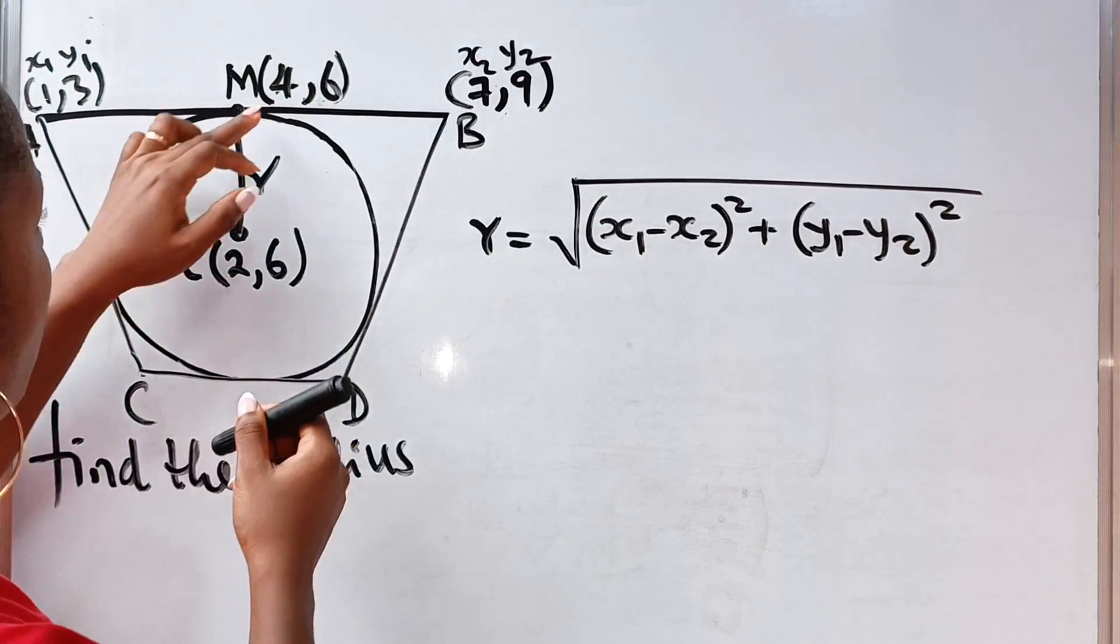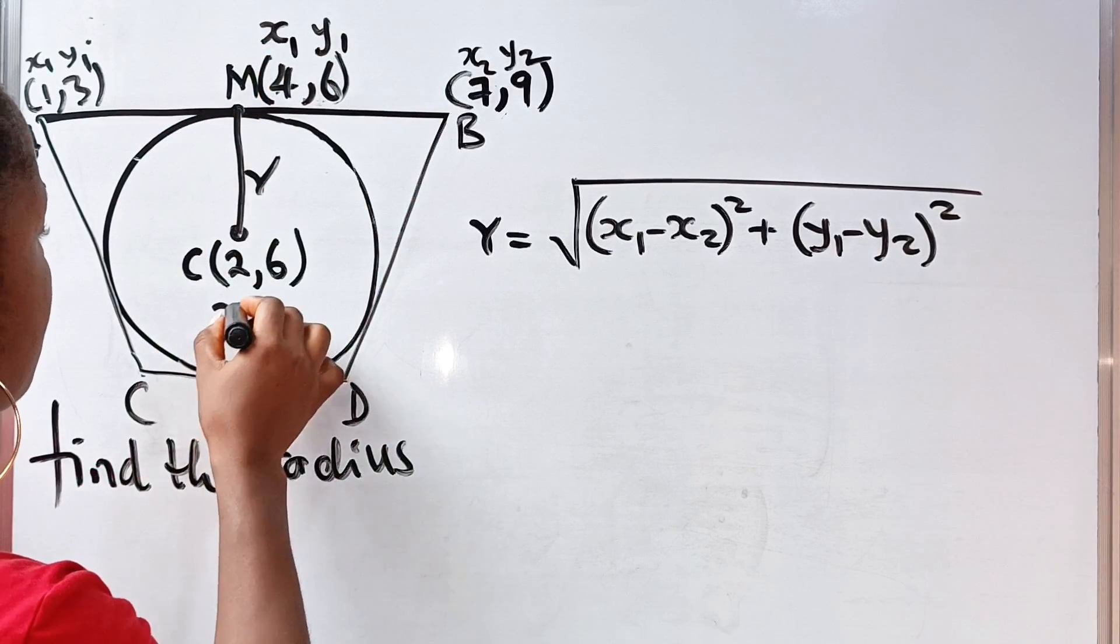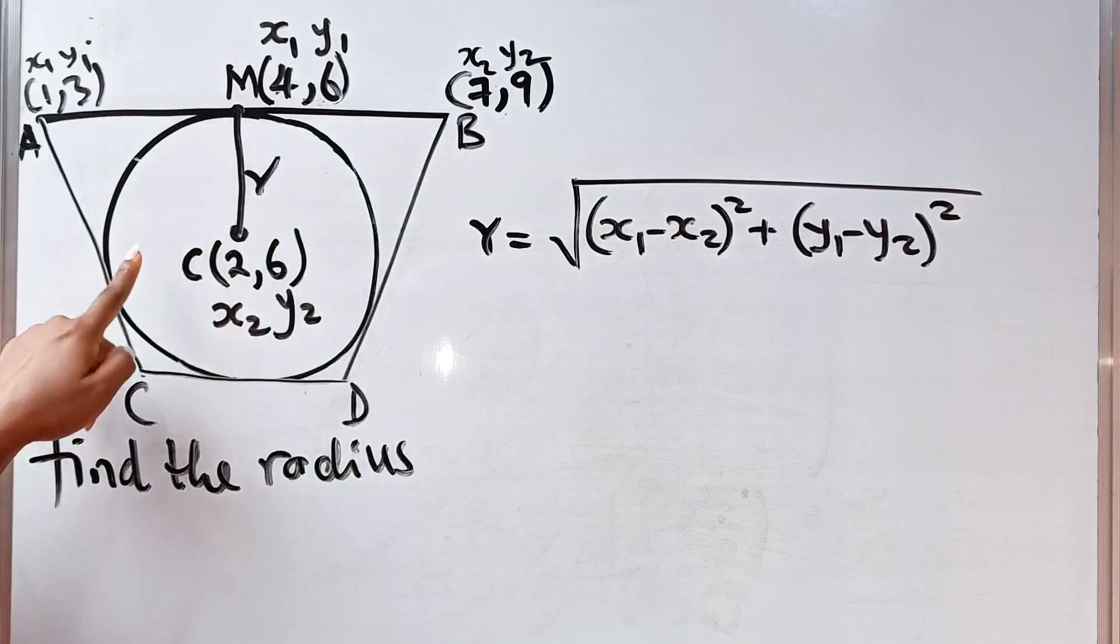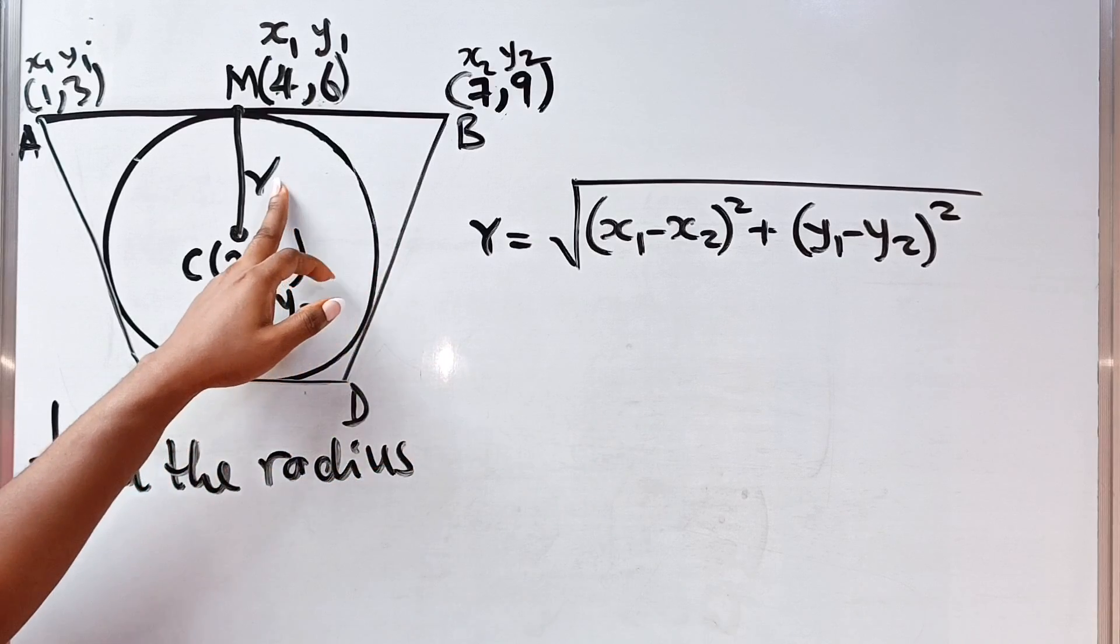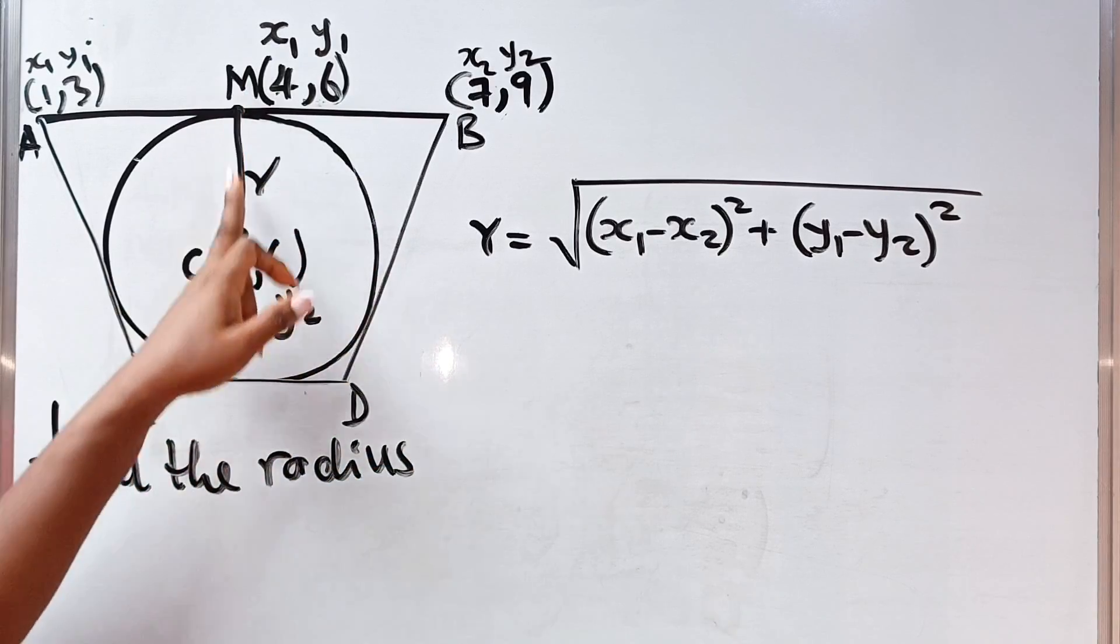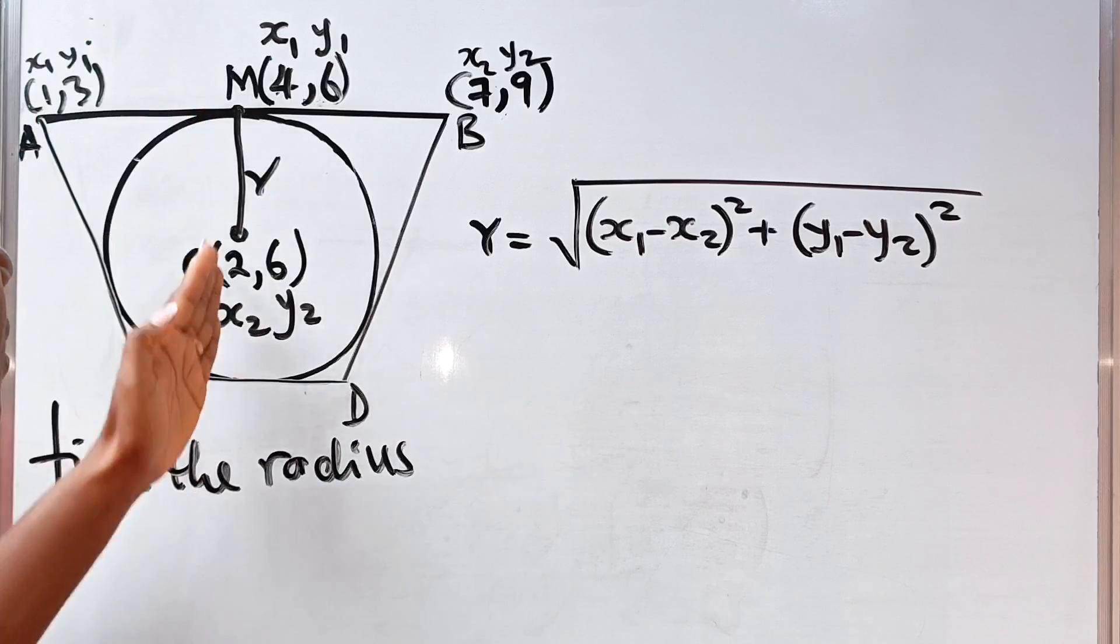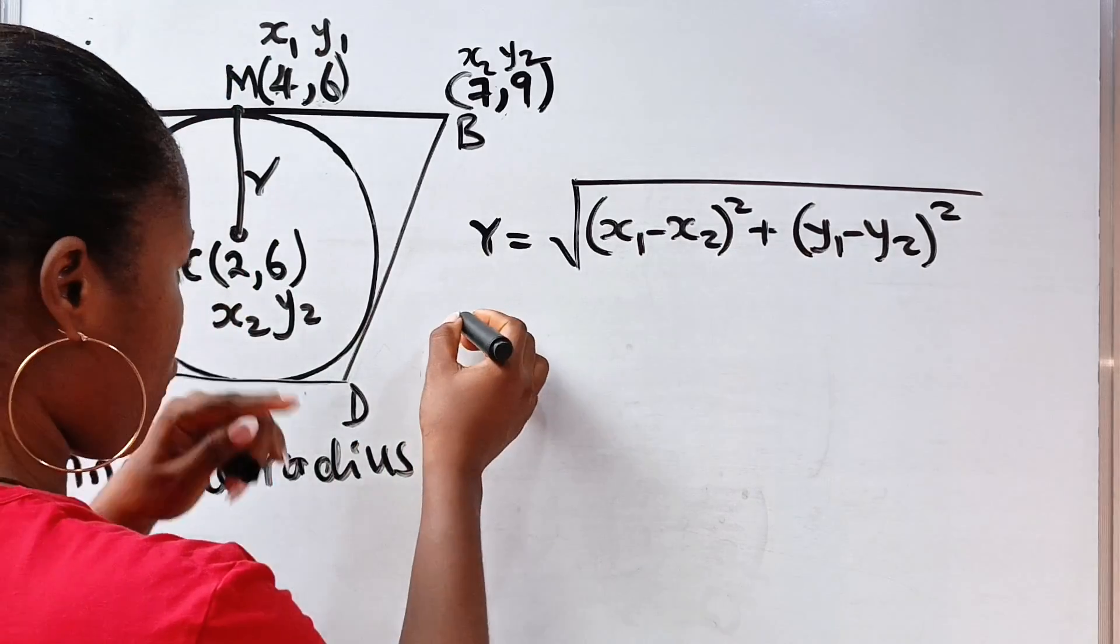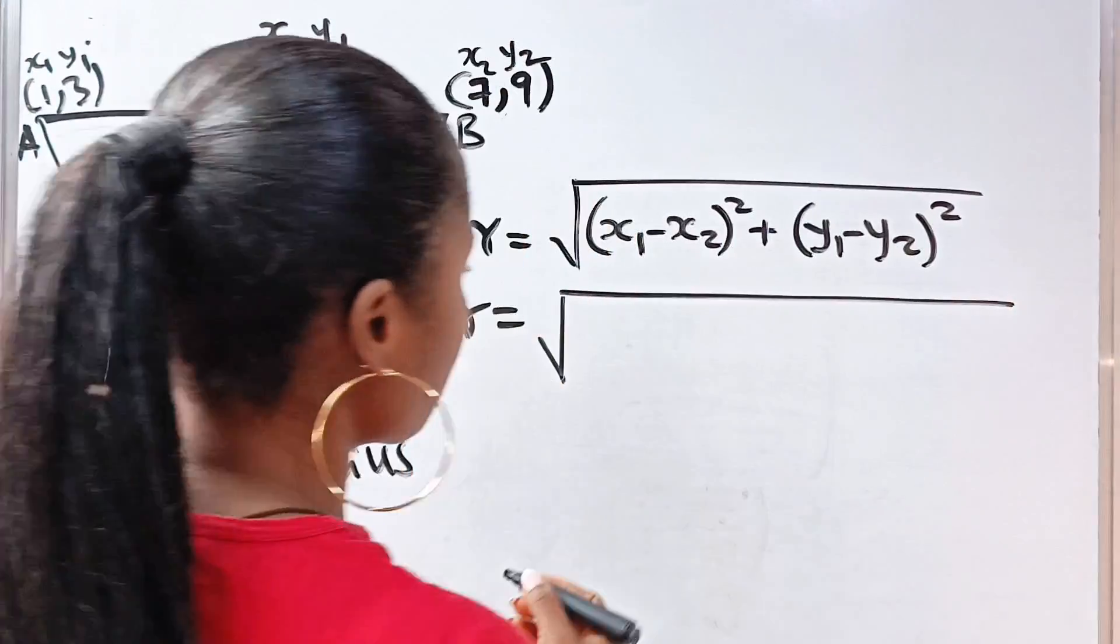Now, let us call this x1 and y1, and call this x2, y2. I'm talking of the line MC, the length now. Now, R being the radius of the line, being the R is the radius of the circle and equal to the distance between M and C. Therefore, the radius will be equal to the distance, the square root of,